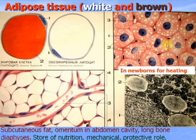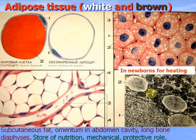Brown adipose tissue is responsible for heating of newborns. They oxidize organic compounds and obtain energy not converted to ATP, but released as free heat for heating of blood and body — necessary for human newborns as well as for animals which sleep during winter in cold, for example a Russian bear.